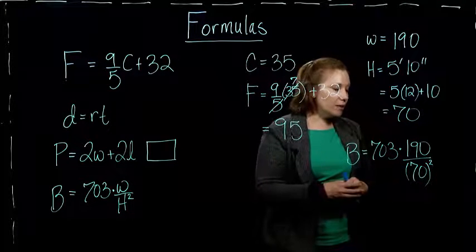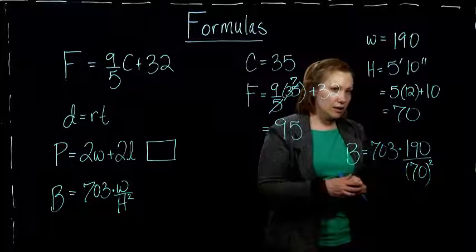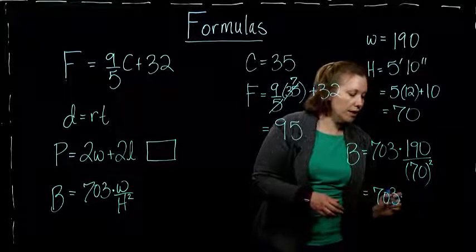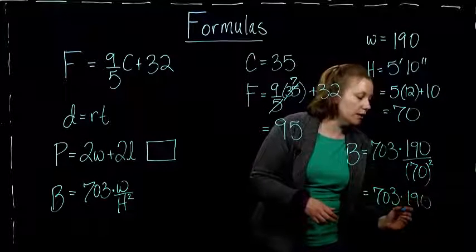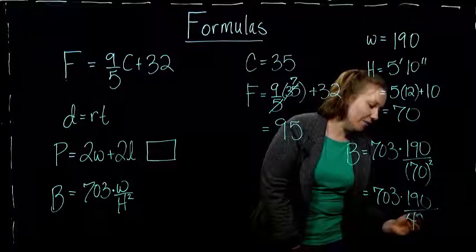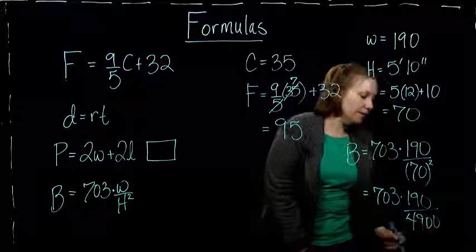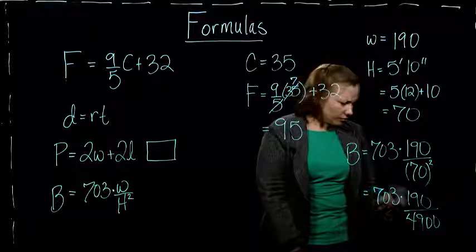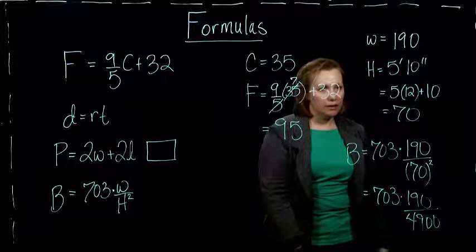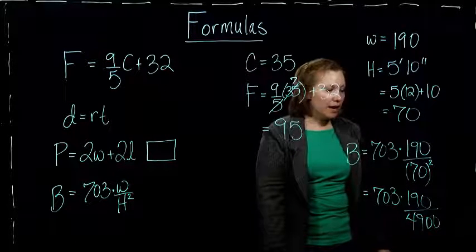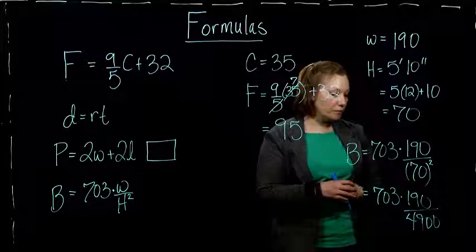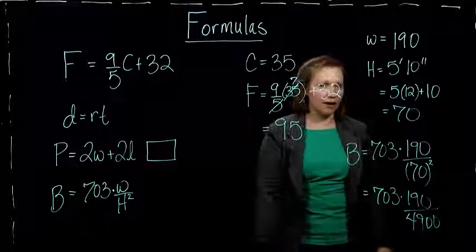And so, what we know about arithmetic, we have to take the 70 and square that first. So, I get 703 times 190. 70 squared is 4900. And then we would take and multiply and then divide and we would get our correct answer. And that is how we use formulas to calculate values for things like body mass index and Fahrenheit temperature.